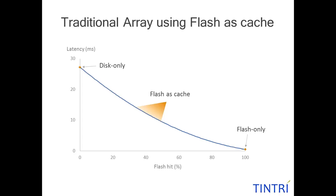Traditional storage with flash as a cache is useful — hot data blocks get promoted into cache and can be serviced from flash at between 10 and 15 milliseconds round-trip, with roughly 30% to 50% hit rate for read-intensive workloads. However, more and more data has a dependency for low-latency writes — particularly VDI, where everything about VDI beyond the initial boot storm and antivirus scan is write-intensive, down to moving the cursor across the screen. You really do need low-latency write performance into flash.